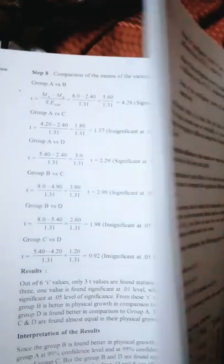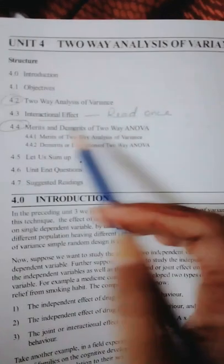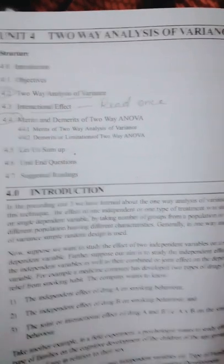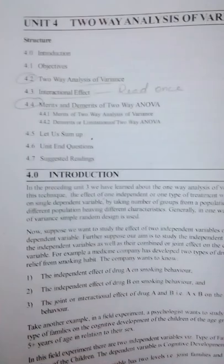Then from the last chapter: two-way analysis of variance. Numericals can also come from this and merits and demerits of two-way ANOVA. And you can read interactional effect for once, like if it may come for three marks so you can just read it.